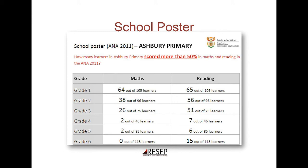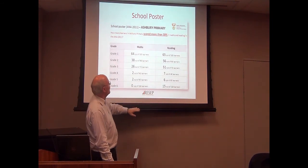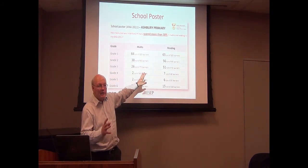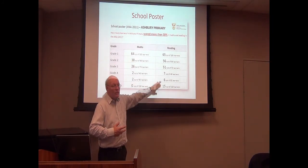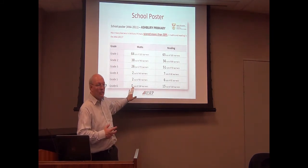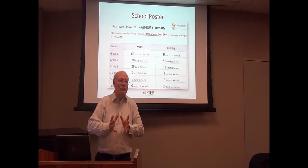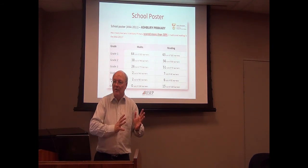We can also provide a school poster. If we take fifty percent as the level at which learners should be operating, we can say: sixty-four out of one hundred and five learners in grade one are at that level, but none of the learners in grade six are. That doesn't mean the problem lies with the grade six teacher — it lies somewhere along the way — but it tells parents there's something wrong in the school, particularly in maths. The school is then being held accountable to the parents and the community, and that's where the process of accountability begins.